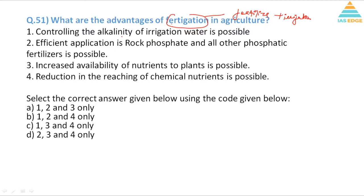Fertilizer is usually soluble in water. First is controlling the alkalinity of irrigation water is possible - that is true. The level of water can change the alkaline level of the fertilizer, so one is correct. Increased availability of nutrients to plants is also possible. Reduction in the leaching of chemical nutrients is possible. Yes, leaching is a process where excessive water can be there, so by regulating the water the leaching can be prevented, so the fourth option is also correct.